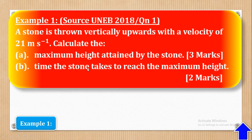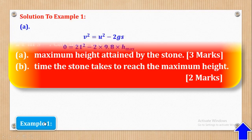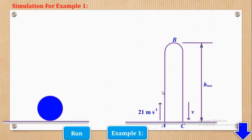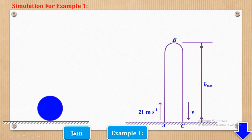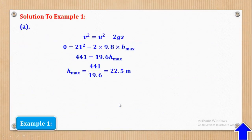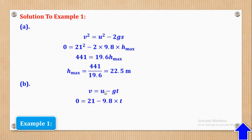In part B, they said find the time the stone takes to reach the maximum height — that is, the time to move from point A to point B. If you look at the simulation, at the maximum point the particle is momentarily at rest, meaning its velocity at that point is zero. So the final velocity is 0, initial velocity is 21. Using the first equation of motion, V equals U minus GT, substituting V is 0 and U is 21 and G is 9.8, I have only one unknown which is T. When I make T the subject, T equals 2.1429 seconds.